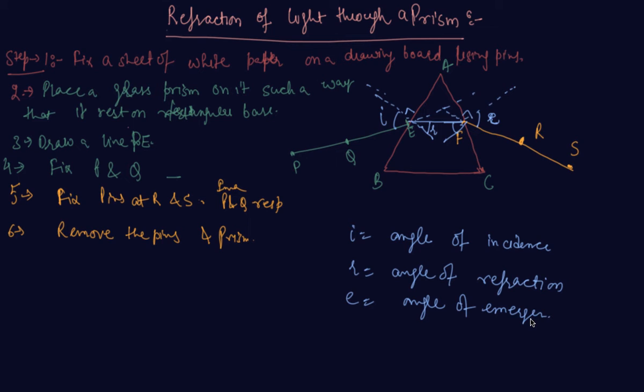Is this similar to the kind of bending that occurs in a glass slab? No students. The peculiar shape of the prism makes the emergent ray bend at an angle to the direction of incident ray.